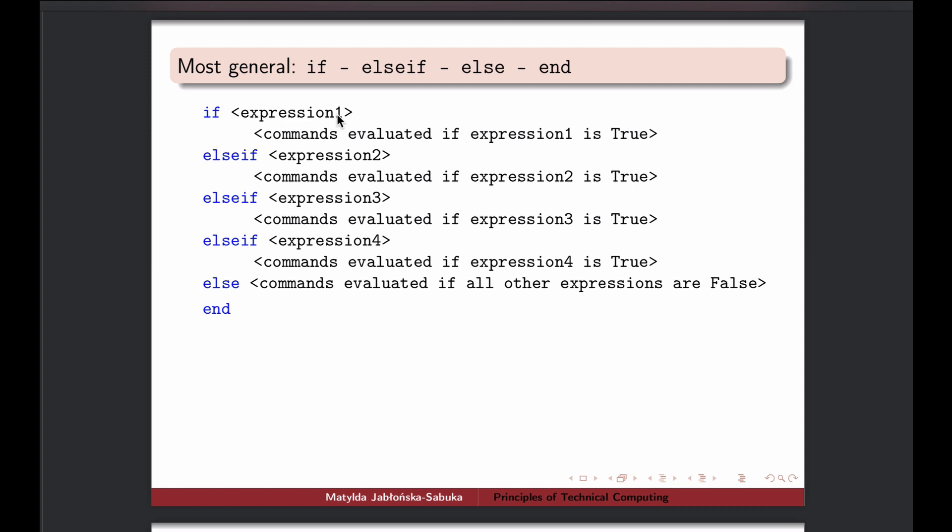How it works is, it always starts from the beginning. So first it checks expression 1. If this one is true, it will end, it will never visit any other case. But if this is not true, it will move on to number 2, so it will check expression 2. If that one is true, this will be evaluated. If not, it moves on. So it will keep on checking until it finds the one which is true, and then do the job.